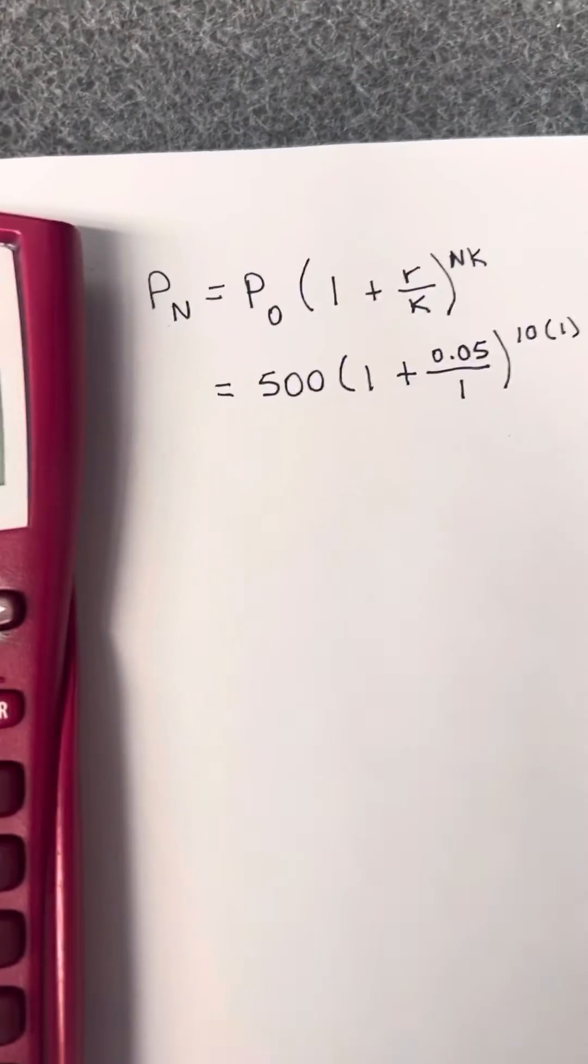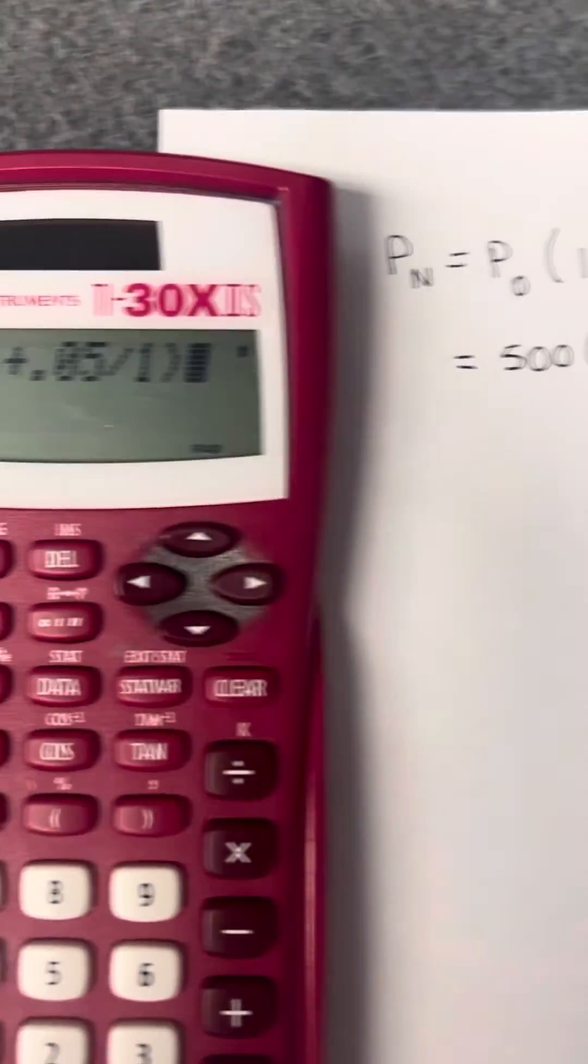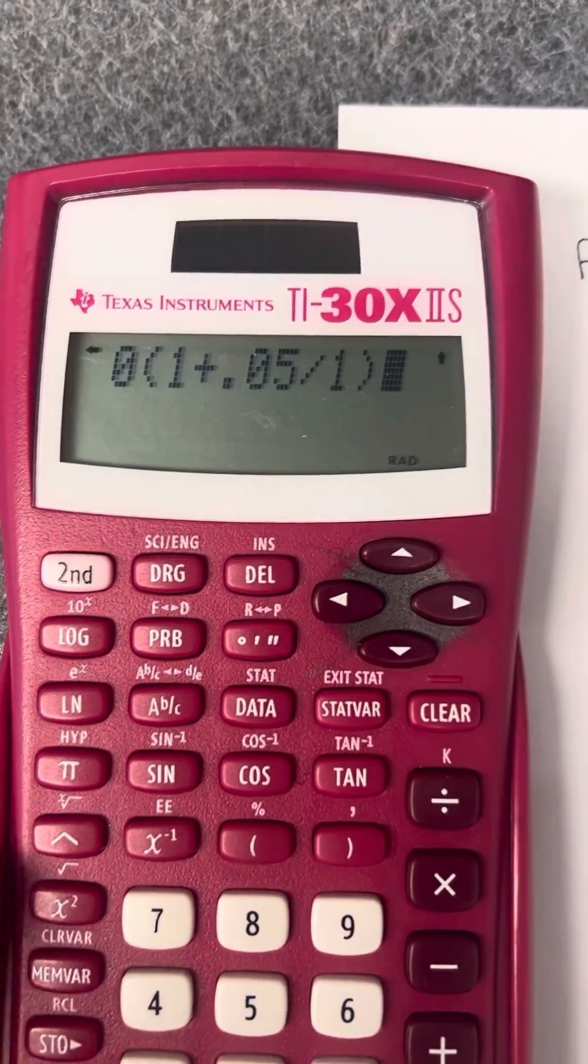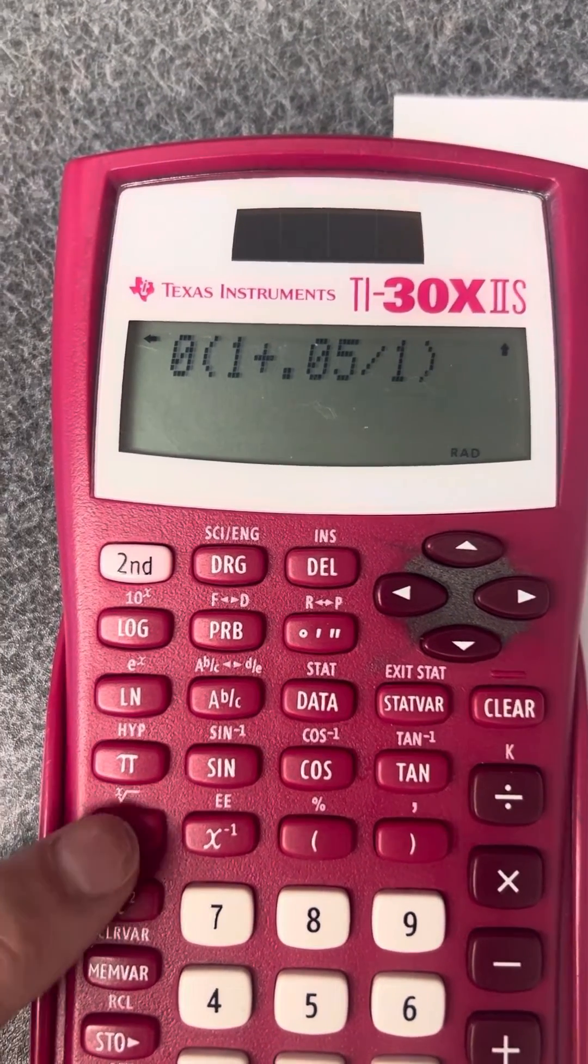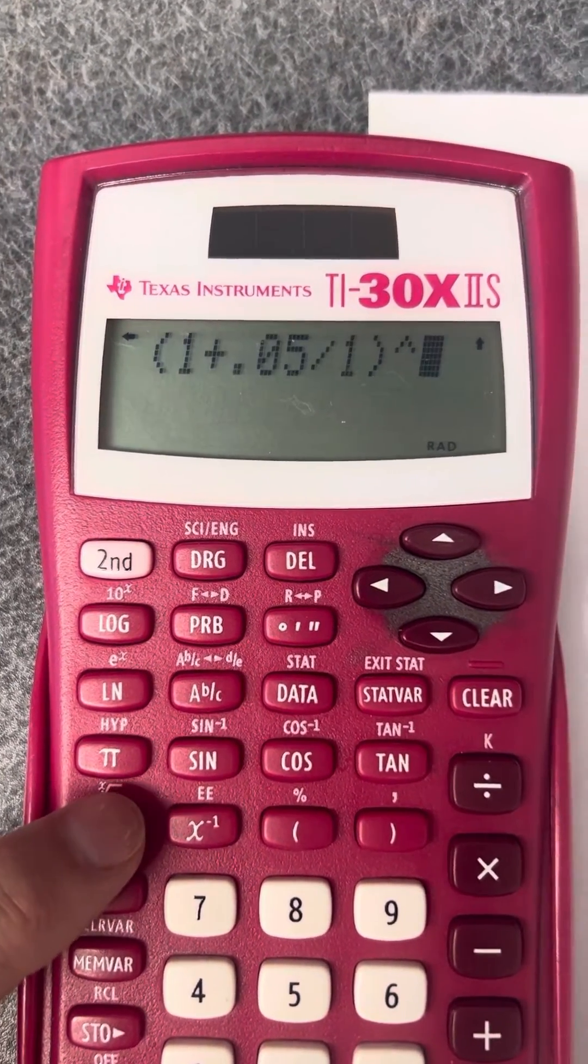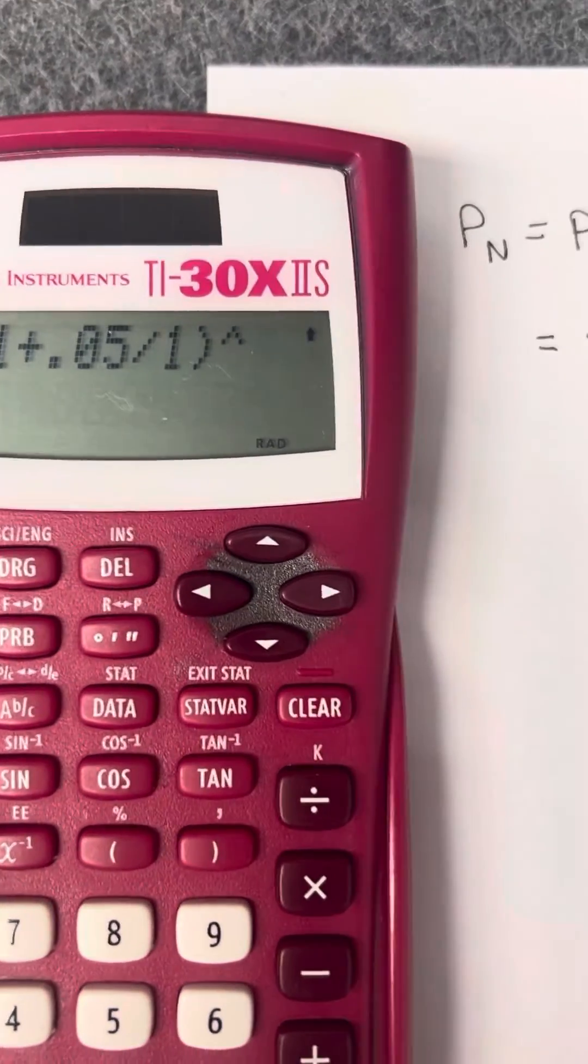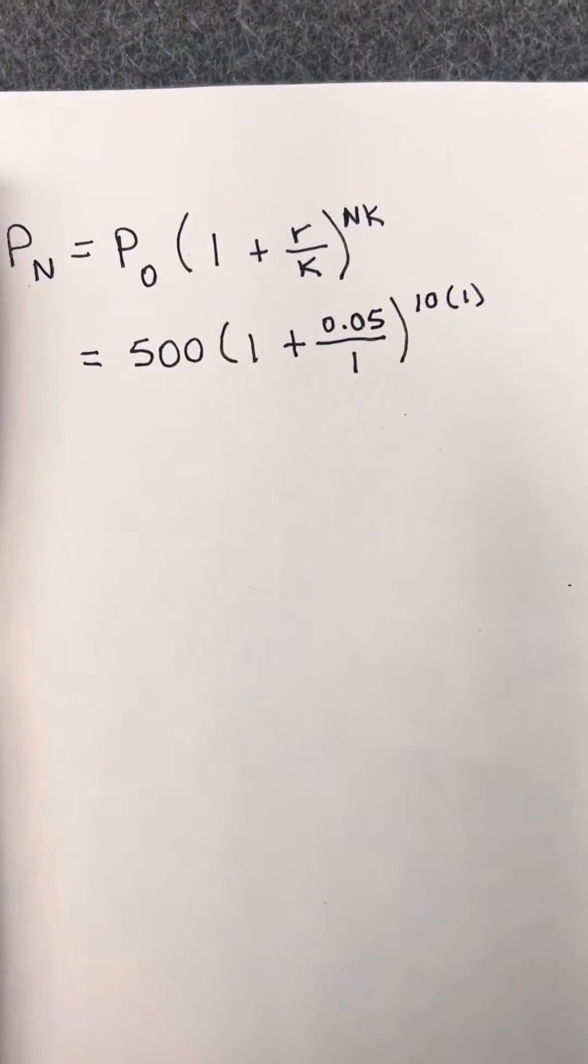The whole thing that's in parentheses is then raised to a power. To raise this parentheses to a power, we're going to use this little caret key, this key right here. It looks like an arrow pointing up. We press the caret key, and then I'm raising it to the 10 times 1 power.